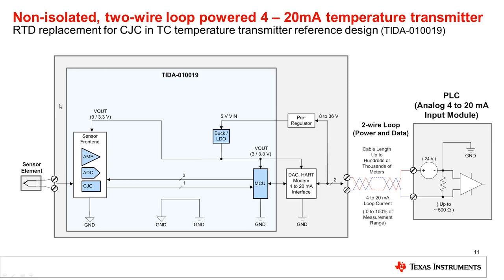The block encircled by that line shows another TI reference design called RTD replacement for cold junction compensation in thermocouple temperature transmitters, TIDA-019. It shows exactly the same sensor front end, the buck or LDO and the MCU, and shows that the input ground and output ground are electrically connected together. However, if you have a thermocouple temperature transmitter, it is very often required to have an isolated design, meaning the ground on the input side must be different from the ground on the output side with isolation in between.